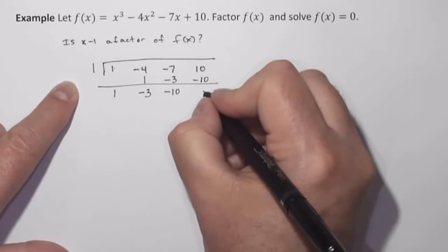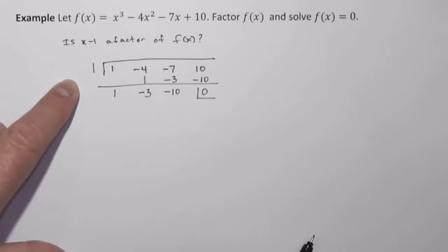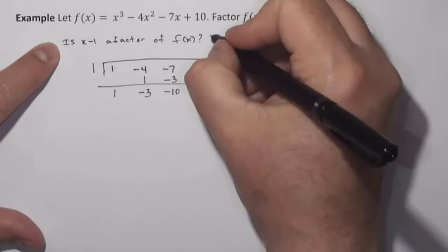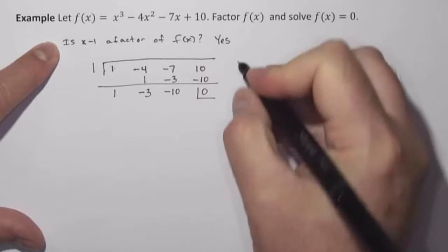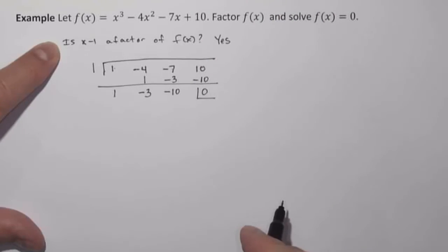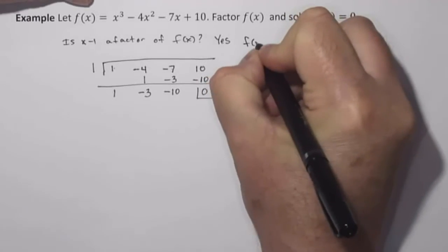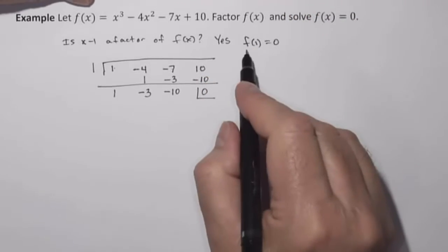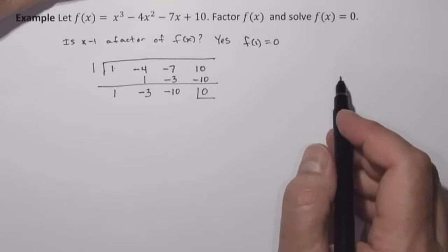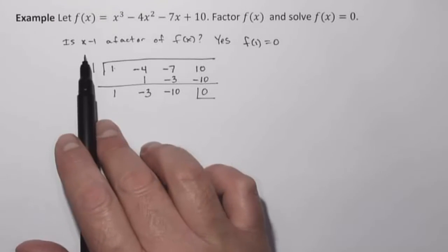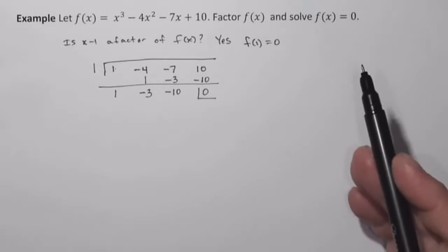And 10 plus negative 10 is 0, which is my remainder. So is x minus 1 a factor of f of x? The answer is yes, because I got a remainder of 0. So what that means is two things. One, f of 1 is 0. So 1 is a zero of the function, which means x minus 1 is a factor of the function.